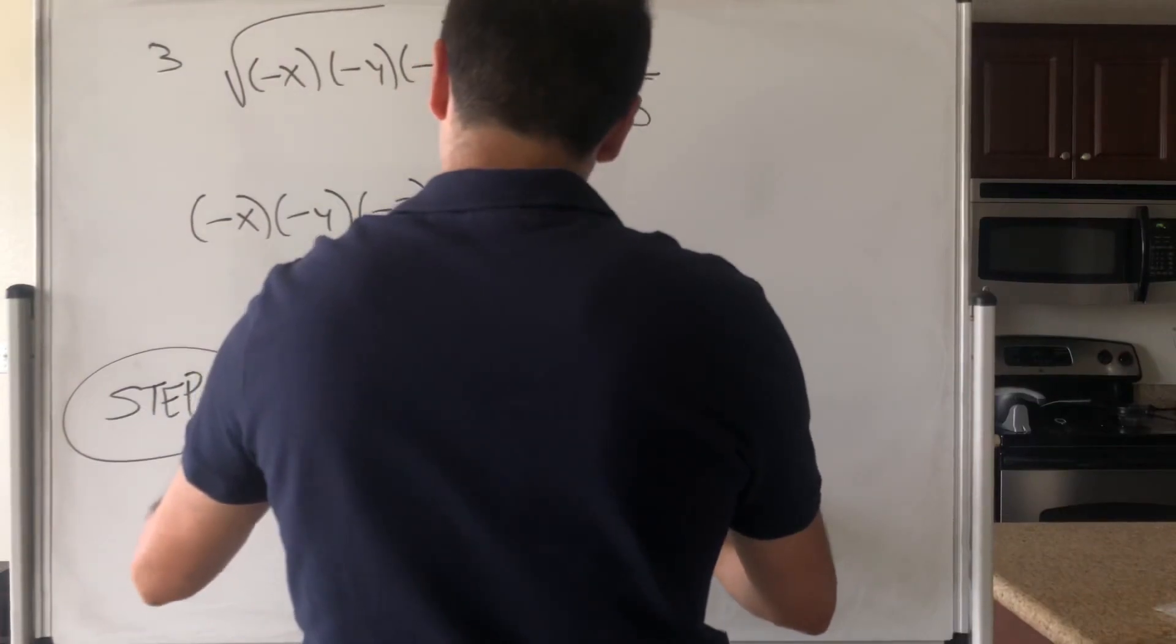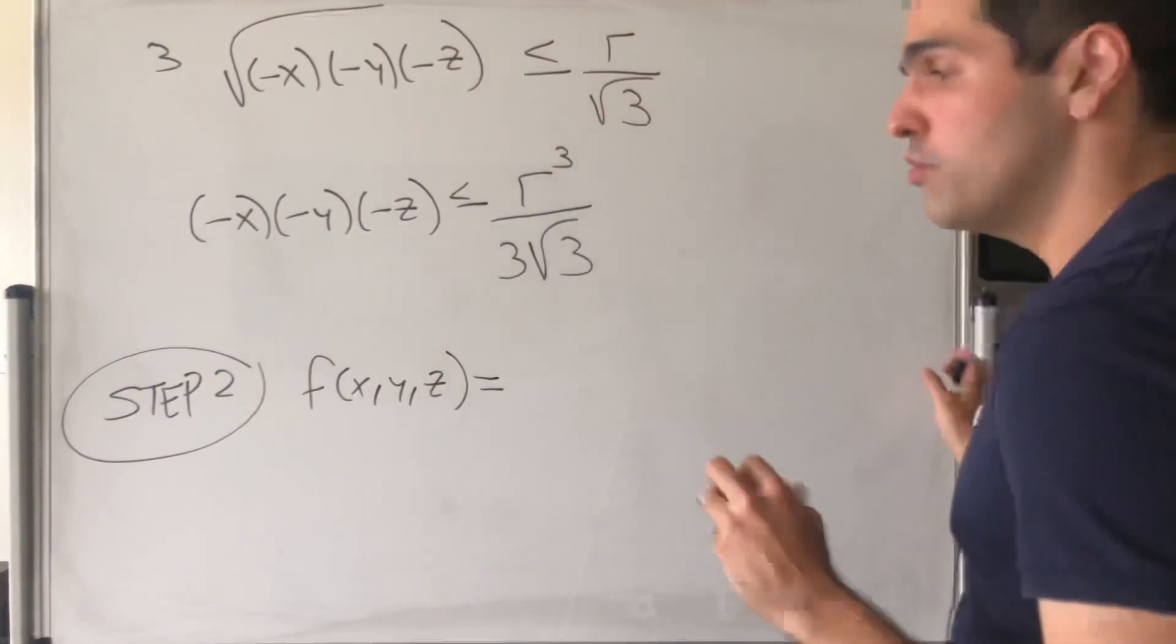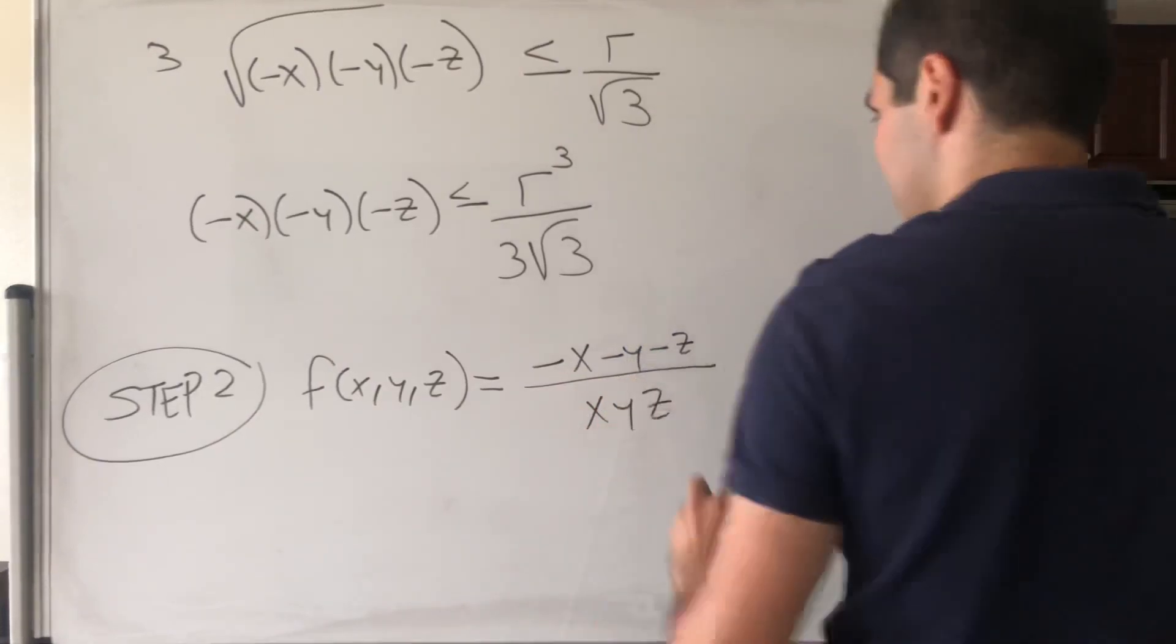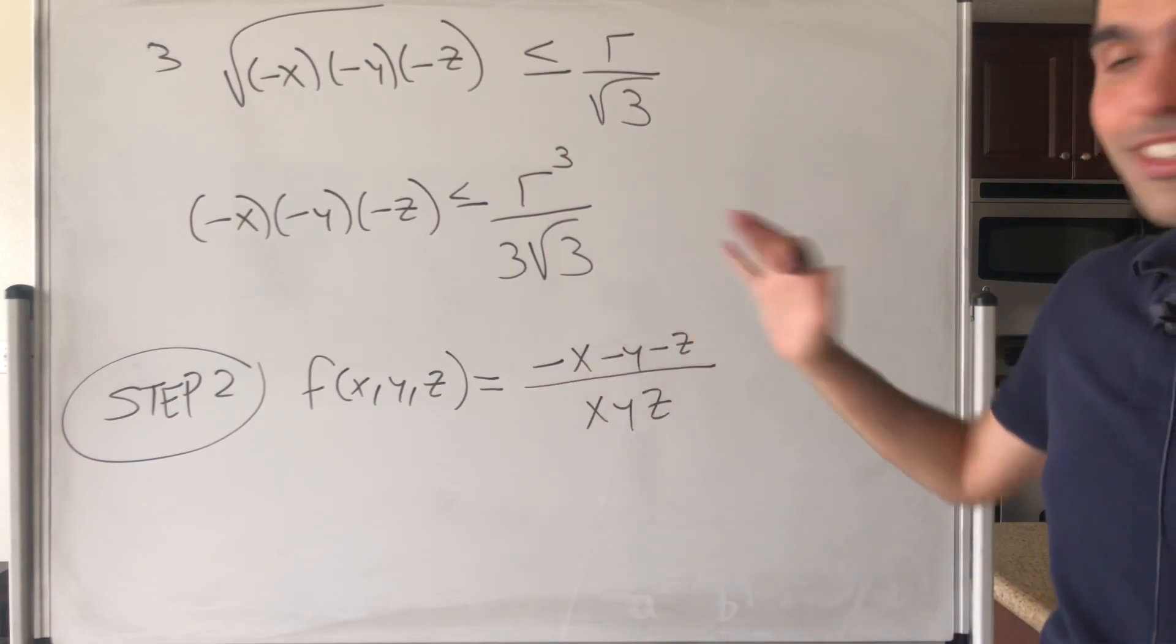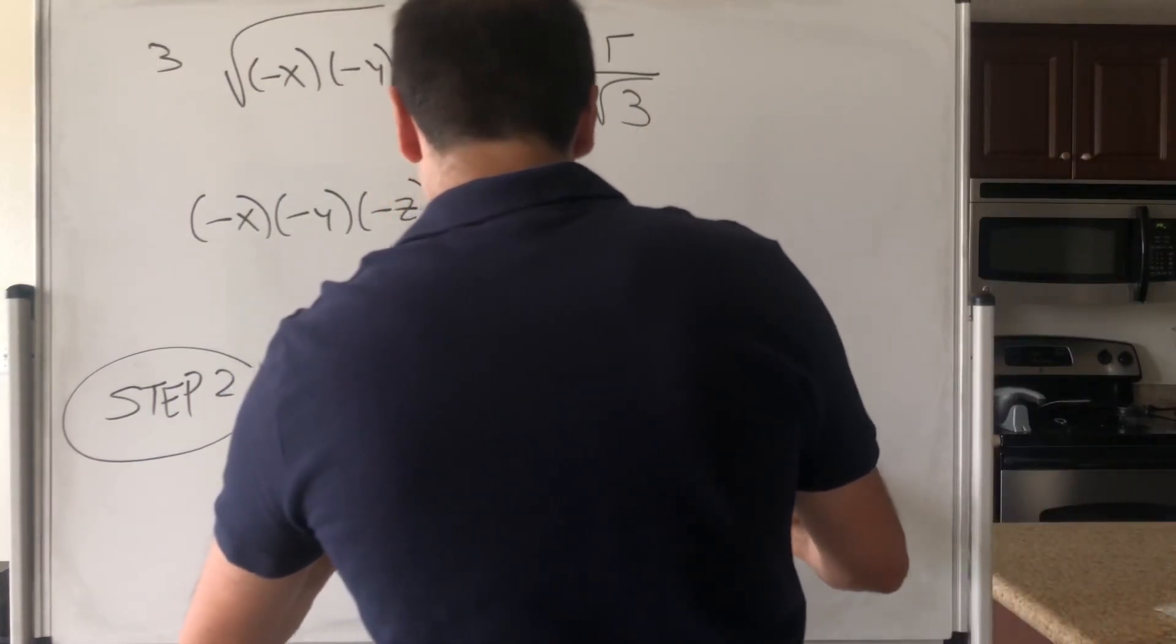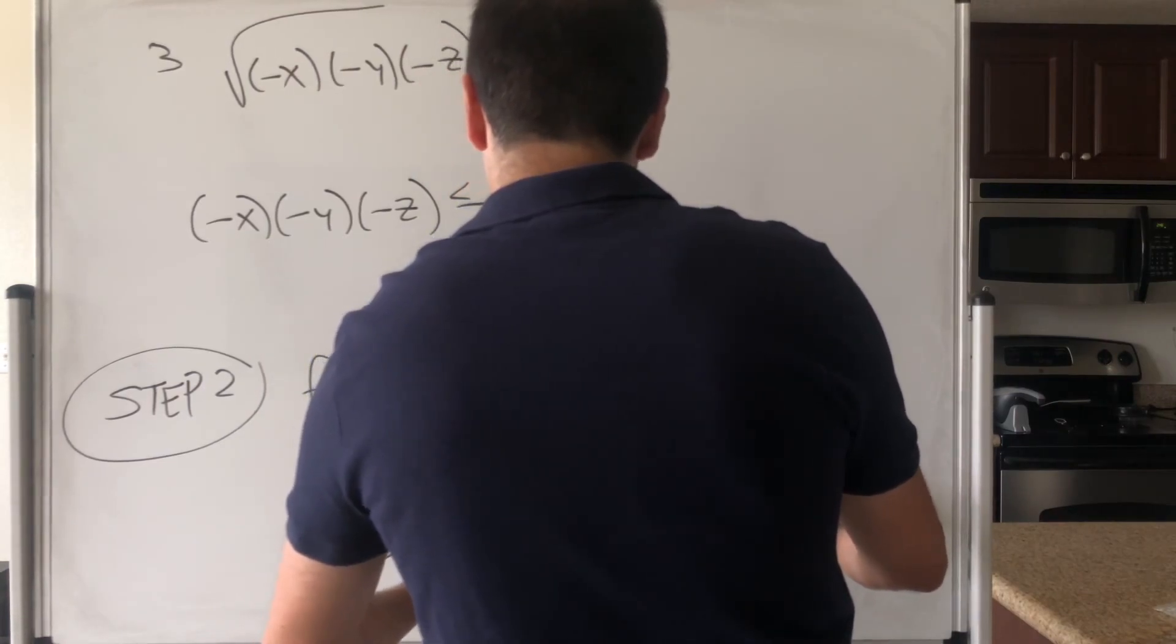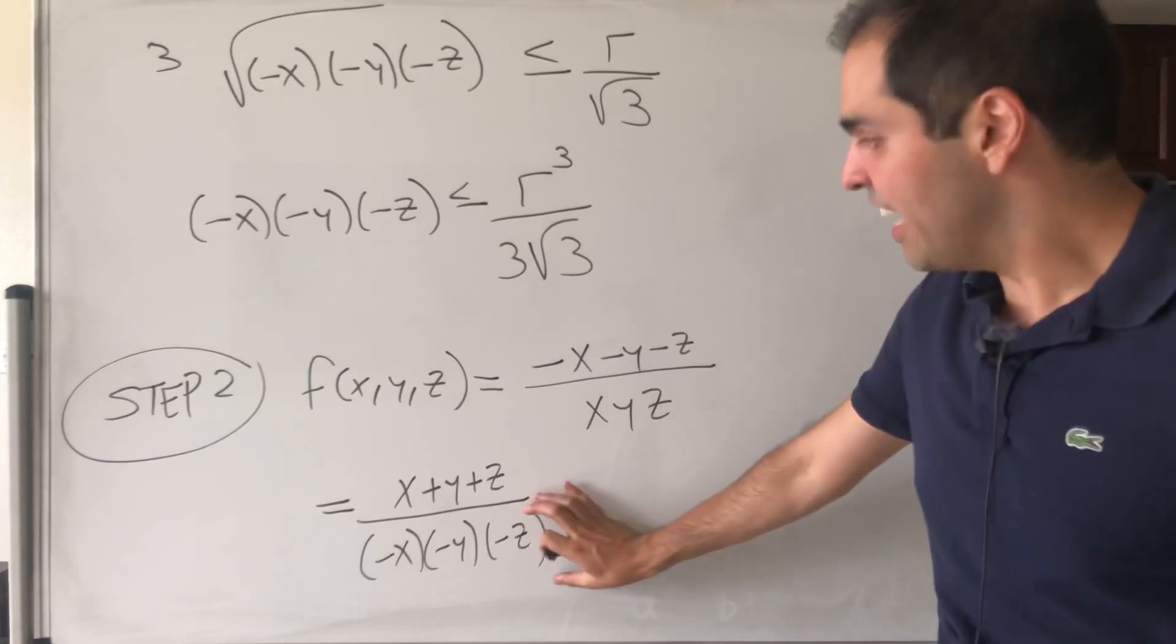We have f of x, y, z. Well, it did have absolute values, but since everything was negative, it's minus x minus y minus z over x, y, z. And here's a beautiful thing, this minus, just put it on the denominator. So, this is the same thing as x plus y plus z over minus x minus y minus z.